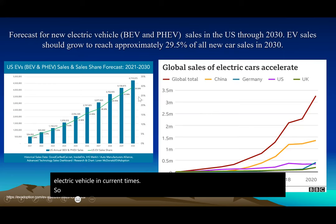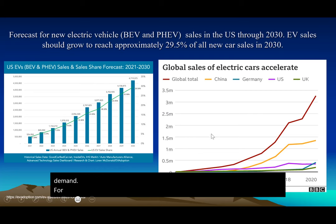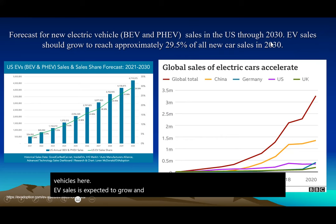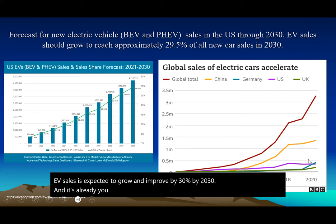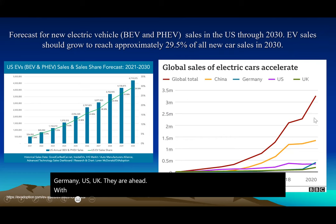Here's a forecast for electric vehicles. As the population increases and demand for transportation grows, there is an accelerating demand for electric vehicles. EV sales are expected to grow by 30% by 2030. You can already see this happening in China, Germany, the US, and the UK, where small electric cars are increasingly common on roads.